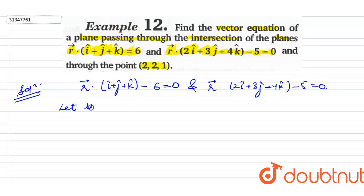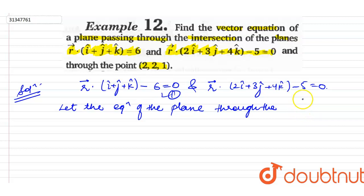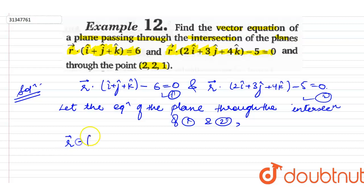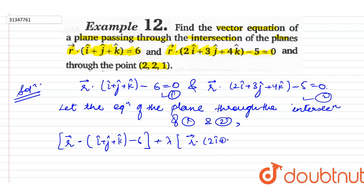Let the equation of the plane through the intersection of planes 1 and 2 be: r-vector dot (i-cap plus j-cap plus k-cap) minus 6, plus lambda times r-vector dot (i-cap plus 3j-cap plus 4k-cap) minus 5, equals 0.